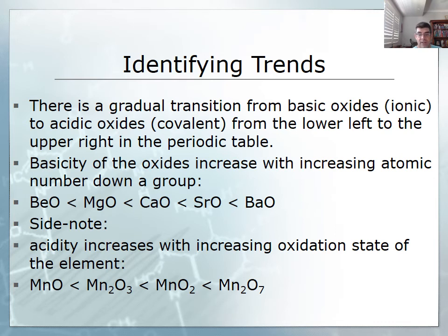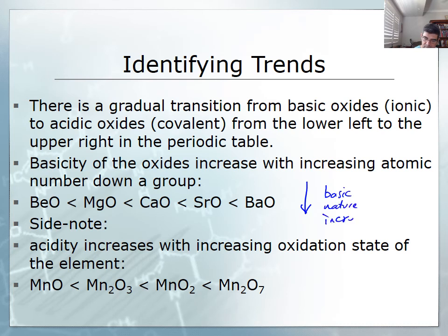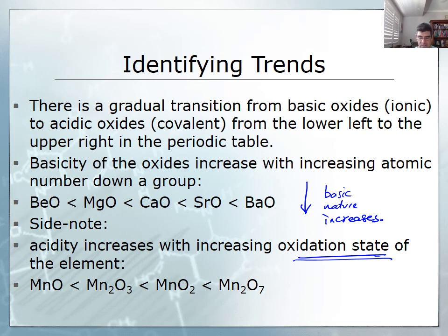Just a few trends to finish off this video. That gradual transition occurs from basic oxides to acidic oxides from the lower left to the upper right of the periodic table. The basicity of the oxides increases with increasing atomic number — so as we go down a group, basic nature increases. There is also a relationship between acidity and oxidation state, which we touched on in the production of materials topic when looking at displacement reactions in galvanic cells — acidity also increases with increasing oxidation state.